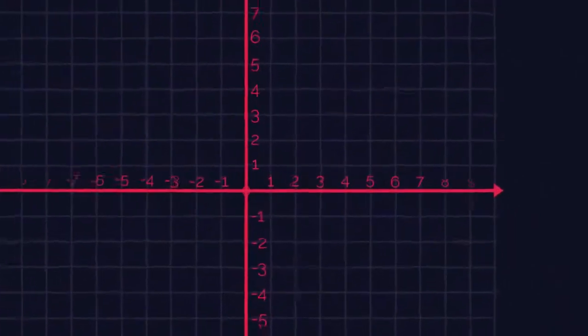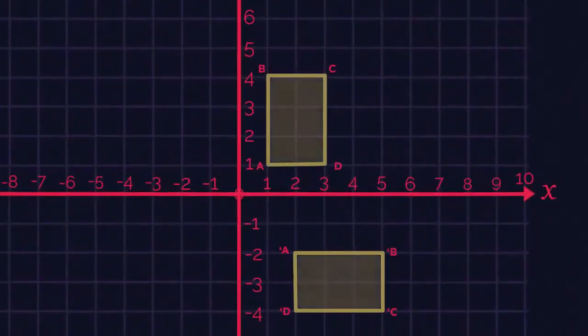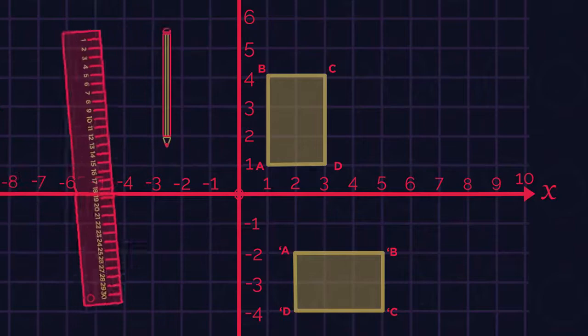So now we know how to rotate a shape around a point, but sometimes we might be given the starting shape and then a new rotated shape and be asked to find the centre of rotation. The most important thing to remember is that the centre of rotation must be the exact same distance from both shapes. Grab a ruler and a pencil and let's get started.